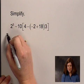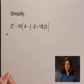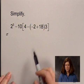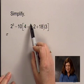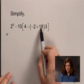In order to do this, we'll begin by simplifying expressions within parentheses, and we'll begin with the innermost set of grouping symbols, which are the parentheses here, which is negative 2 plus 18.